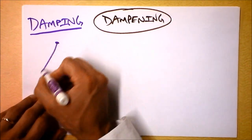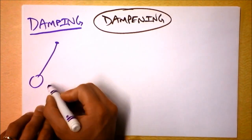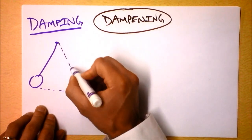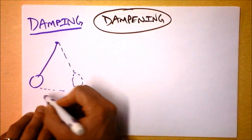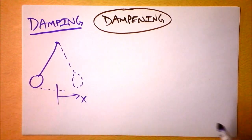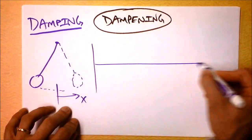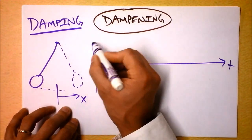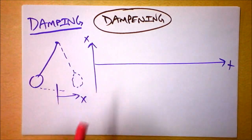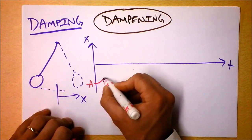So if I've got a pendulum — imagine I've got this pendulum bob right here, and it's swinging — it's going to go over here a moment later, and then it'll go back and forth. I could graph this; we'll call that x as a function of time. X will begin at negative amplitude and then do this.